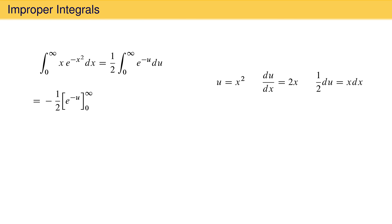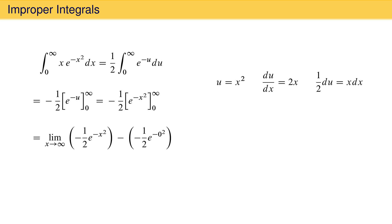Substituting x squared back in for u gives minus 1 half e to the minus x squared evaluated from 0 to infinity. When infinity is involved, we take the limit of the indefinite integral as x goes to the upper bound of integration, infinity, and subtract the indefinite integral evaluated at the lower bound, 0. The limit of e to the minus x squared as x goes to infinity is 0, and the value of the second term is 1 half, so the integral evaluates to 1 half.